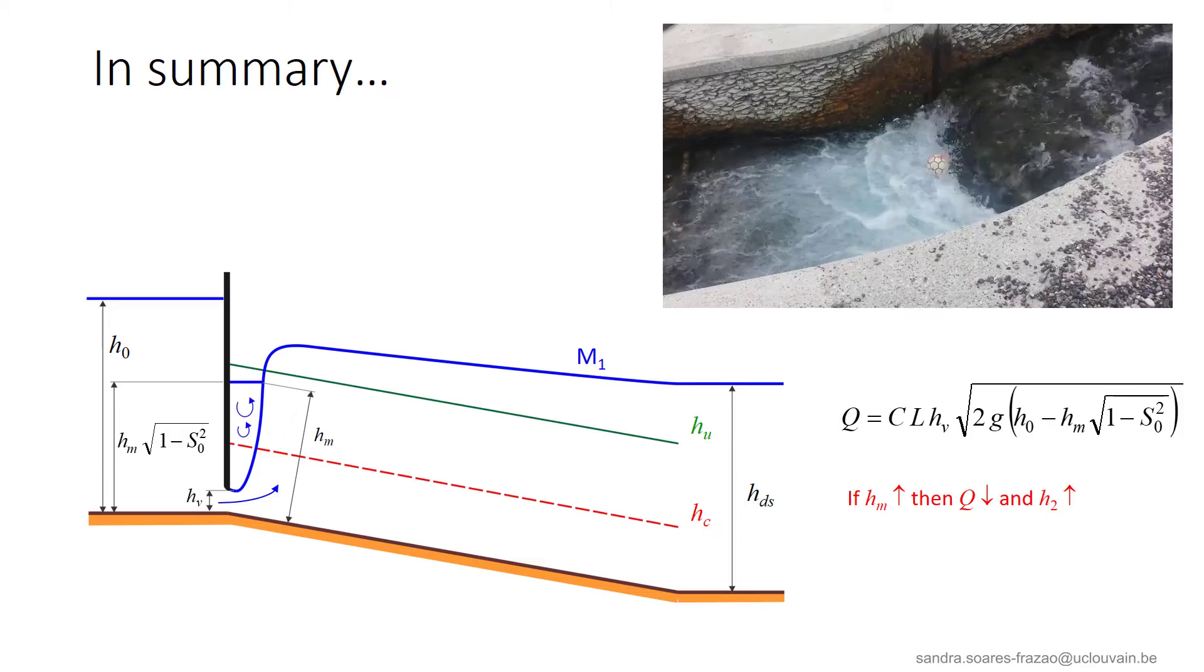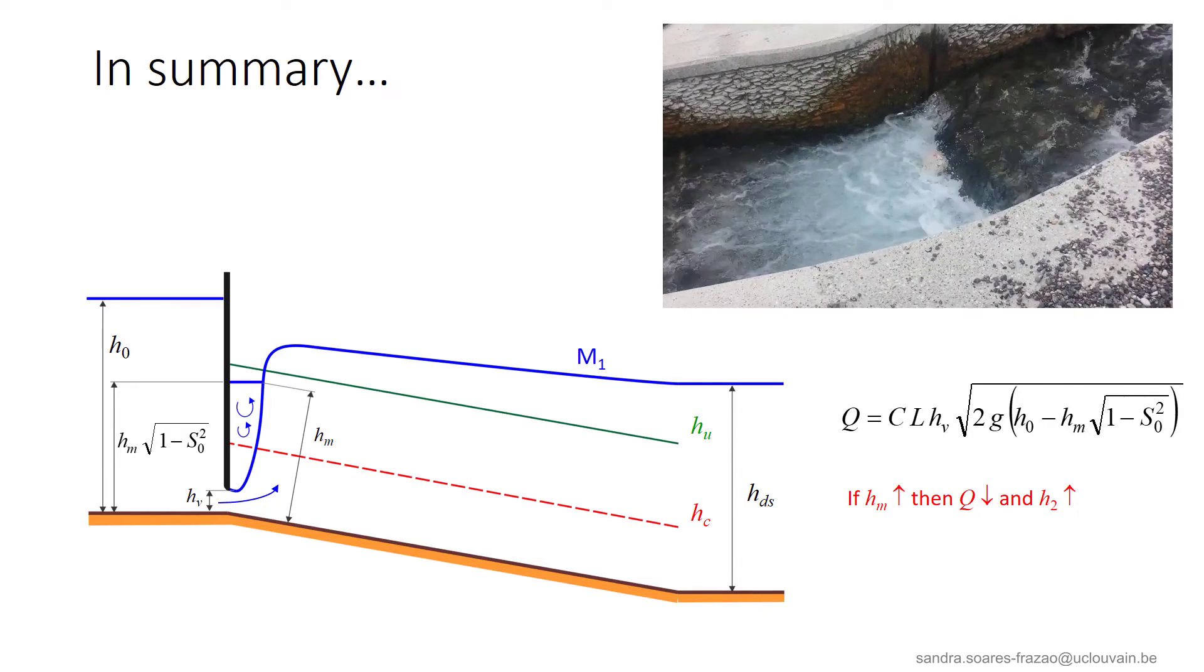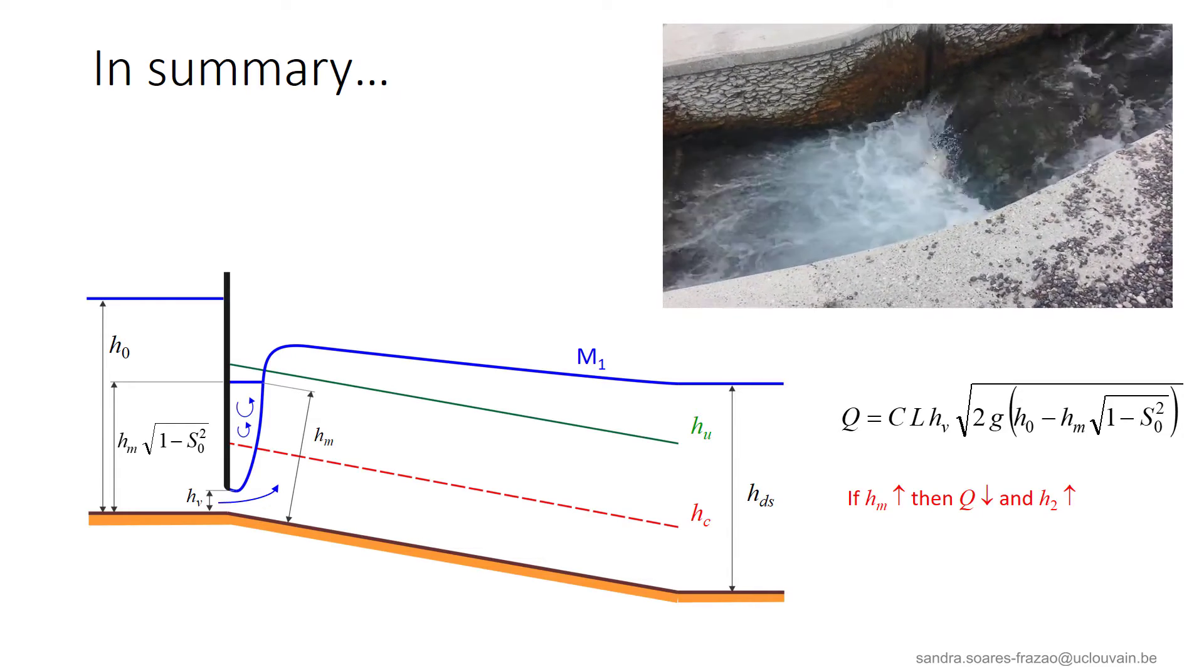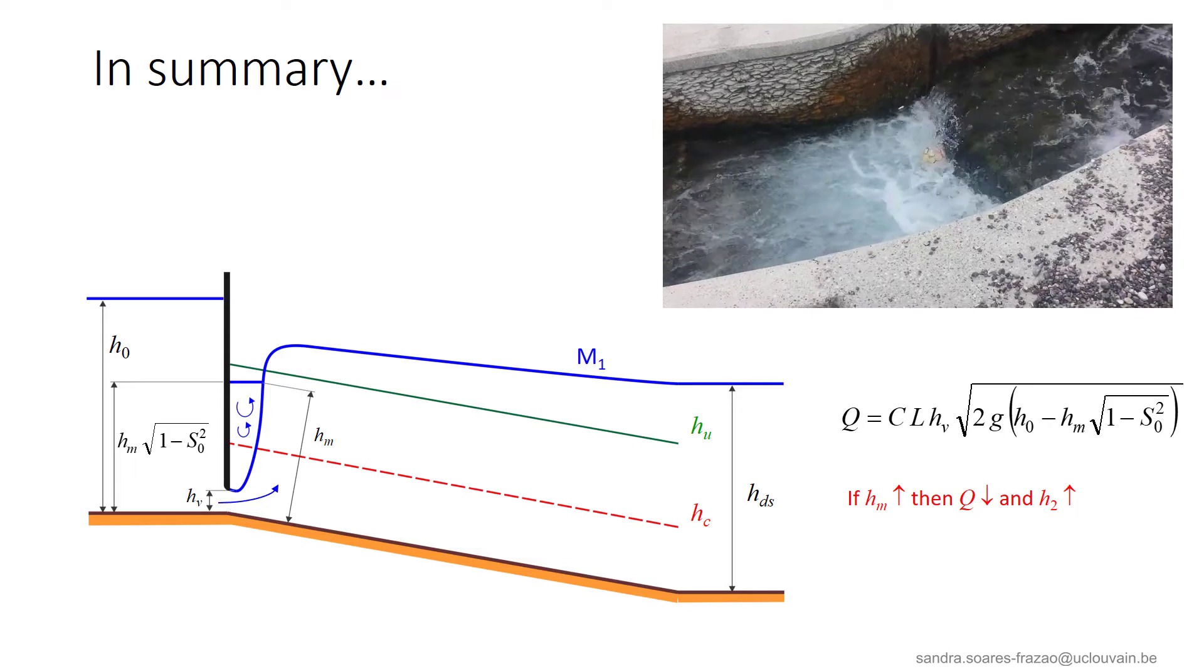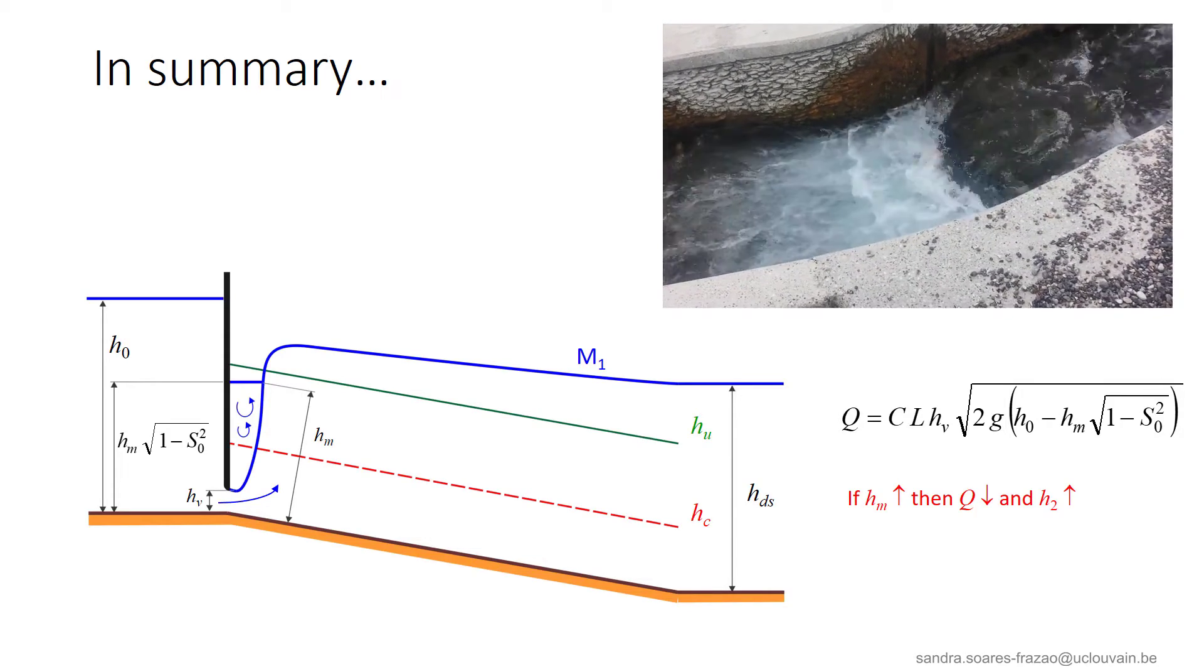So in this lesson, we have seen that a submerged hydraulic jump appears when an upstream underflow gate becomes submerged. The presence of a submerged jump affects the discharge that decreases as a consequence of this submergence.